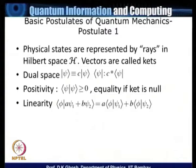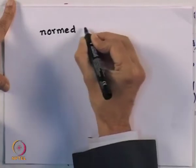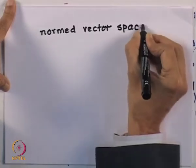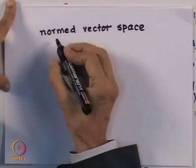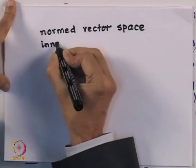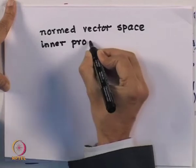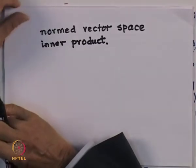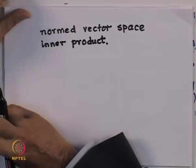Let me explain what a ray is and talk a little about what a Hilbert space is. A Hilbert space is a normed vector space in which the concept of an inner product is defined. Usually this space is infinite dimensional, and it has another property: the space is complete in the sense that it is closed.